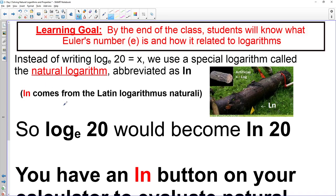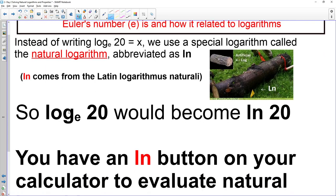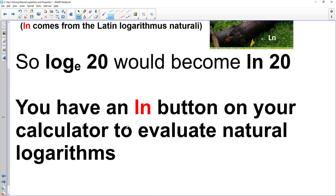So here's kind of a quick example. Instead of writing log e 20 is equal to x, we would use the special logarithm called the natural log, abbreviated as ln. I do have the information - it is the Latin for logarithmous naturali. So log e of 20 would become ln of 20, and you have that ln button on your calculator, which we just saw.